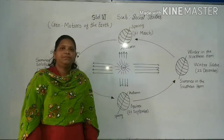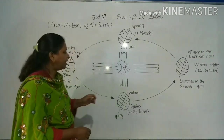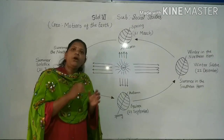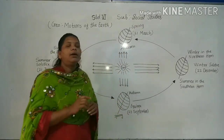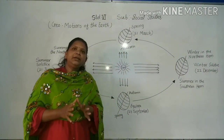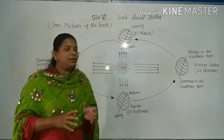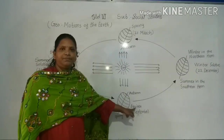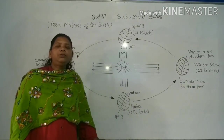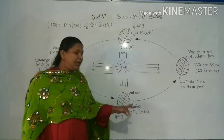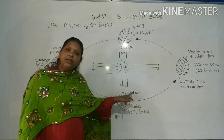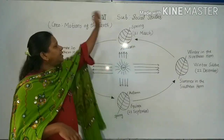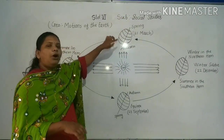On 21st March and 23rd September, the direct rays of the sun fall on the equator. At this position, neither of the poles is tilted towards the sun, so the whole earth experiences equal day and equal night. This position is called equinox. On 23rd September it is autumn season in the northern hemisphere and spring season in the southern hemisphere. The opposite is the case on 21st March — spring in the northern hemisphere and autumn in the southern hemisphere.